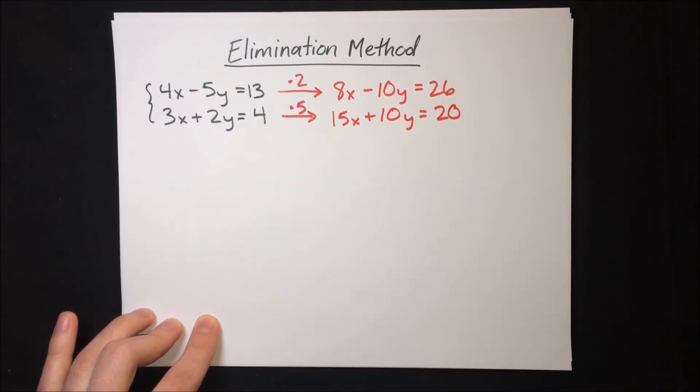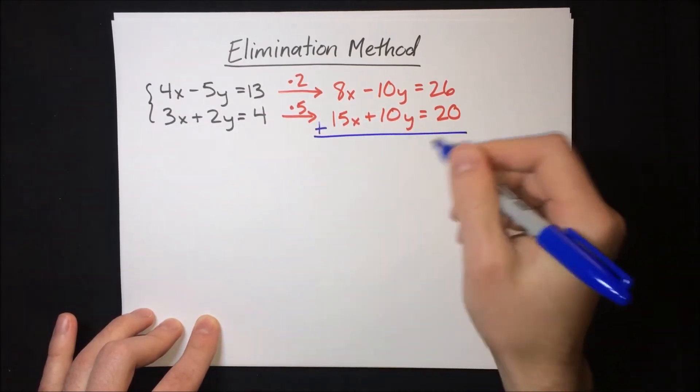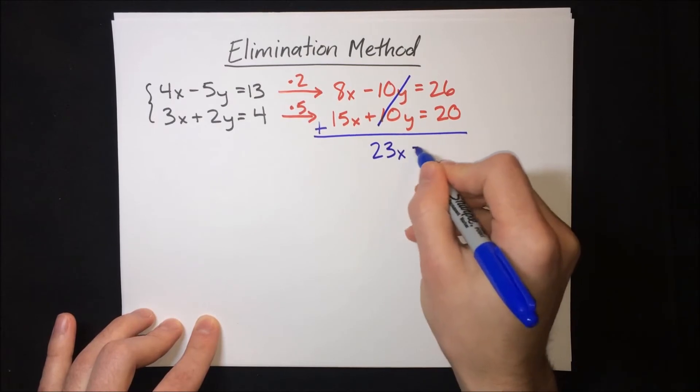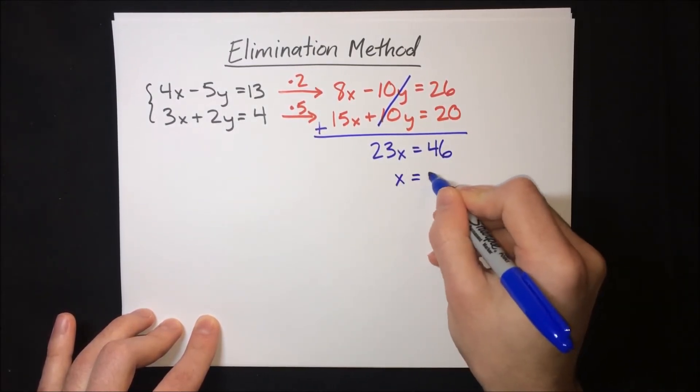Great. Now we have negative 10y, positive 10y. When we add the two equations, those will cancel. And then we just have 23x equals 46. So x is just 2.